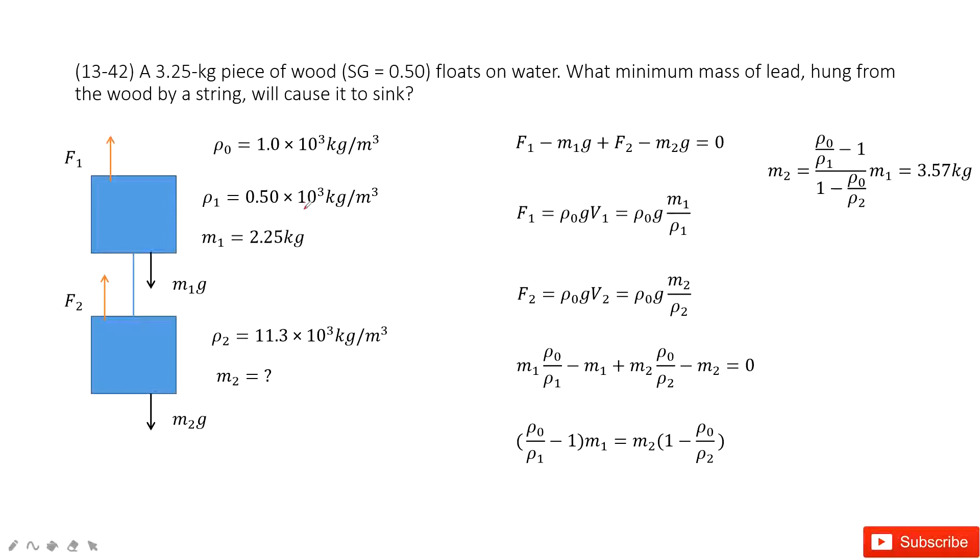In this system, we can see a piece of wood. Its density is given. We consider it as object 1. The mass is given and it floats on the water.